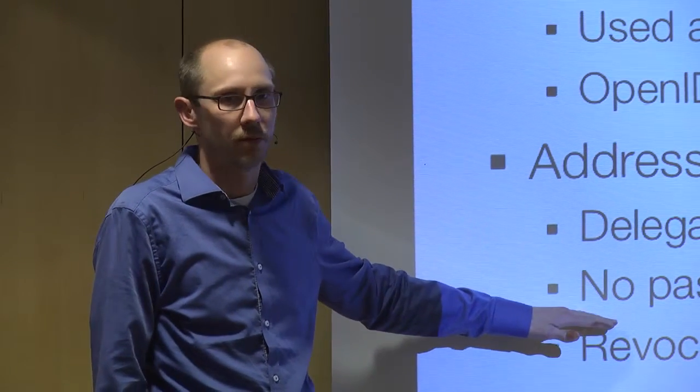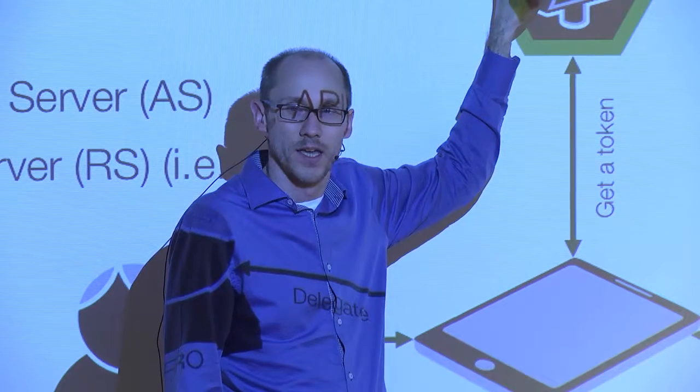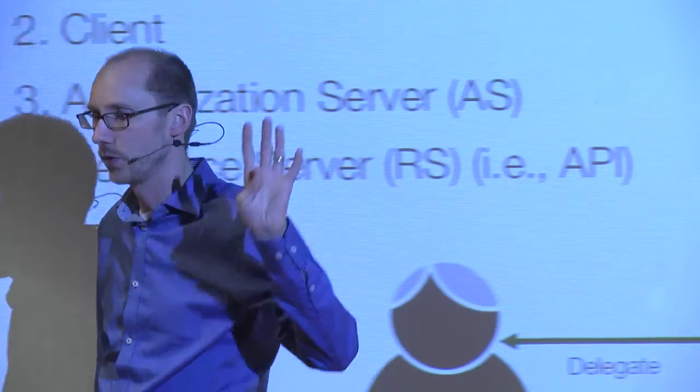OAuth also addresses reduced or no password sharing. Instead of giving your password to different web applications, the application uses OAuth to ensure you've logged in and authorized it to do certain things — without making your password available to it. To accomplish this, there are four actors in OAuth: the resource owner (the end user), the client (the mobile or web app), the authorization server (the OAuth server), and the resource server (the API).